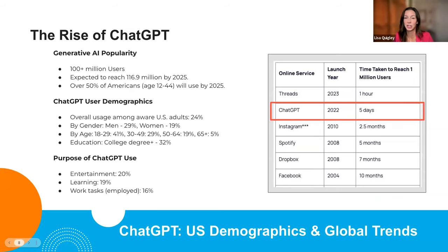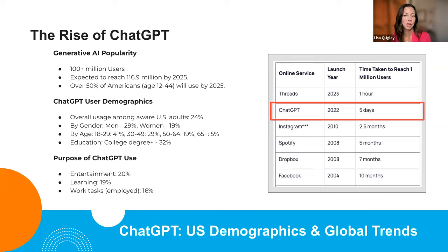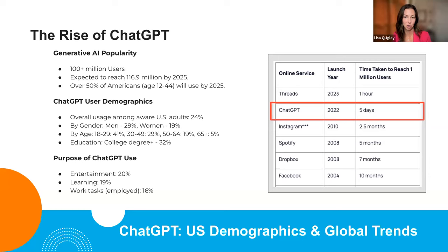Let's talk numbers. Platforms like Facebook took an entire year to gain a million users. ChatGPT didn't take a year, a month, or even a week — it captivated a million users in just five days. By August 2023, it now has an astonishing 1.4 billion visits. Moving on to its global imprint — the US leads the charge with 15% of users, but nations like India, Japan, and Canada aren't far behind.